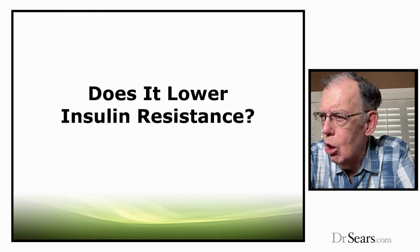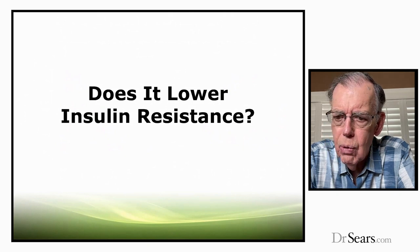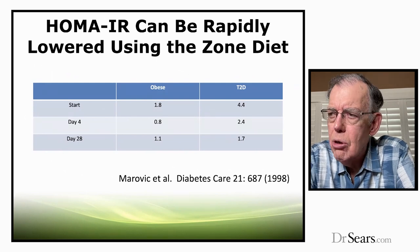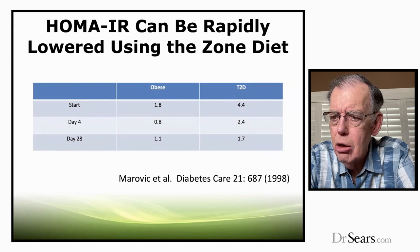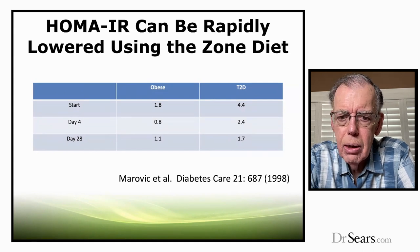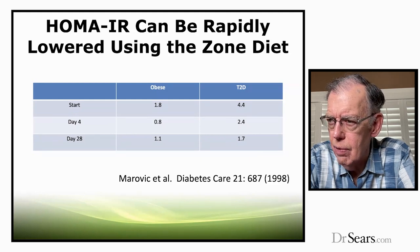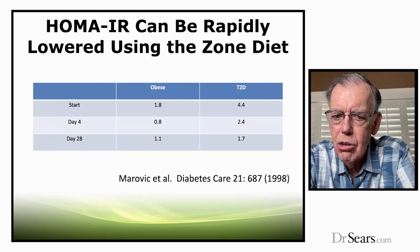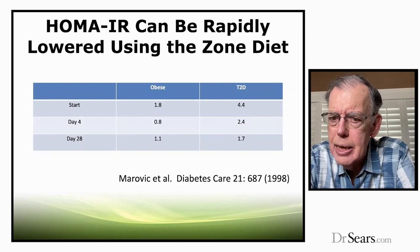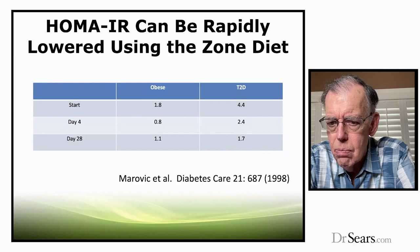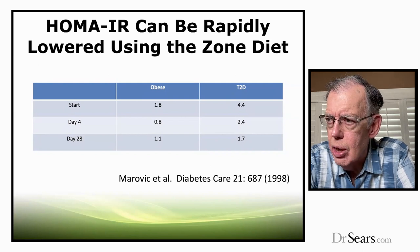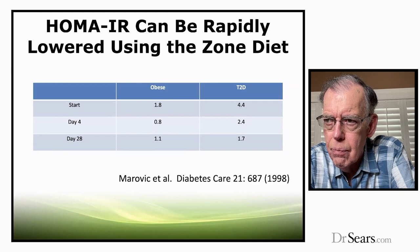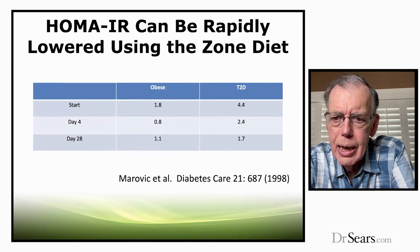Does the Zone Diet lower insulin resistance? This is a study done in 1998 using the Zone diet in both obese and type 2 diabetic patients. At the start of the study, both groups had high levels of insulin resistance — the type 2 diabetics, obviously more. But by four days, before they had lost a pound of weight, levels of insulin resistance had been dramatically reduced. And by 28 days, even though they were now losing some weight, most of the drop had occurred within the first four days. This shows that HOMA-IR — your marker of wellness — can be rapidly lowered by the Zone diet.